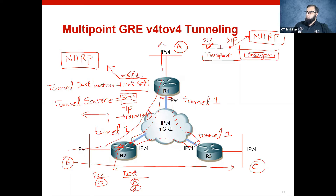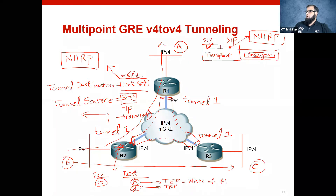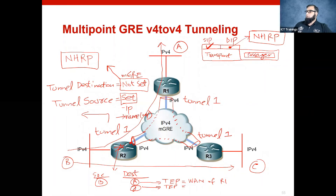This passenger traffic goes through a tunnel interface. So definitely, if someone has to go to network A, then the tunnel's endpoint is different. And when you have to go to C, then the tunnel's endpoint is different. For network A, the tunnel endpoint is the WAN IP of R1. For C network, the tunnel endpoint is the WAN IP of R3.